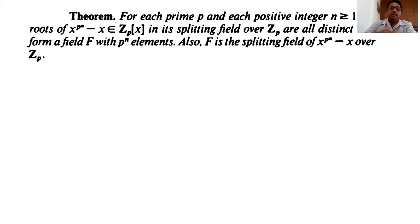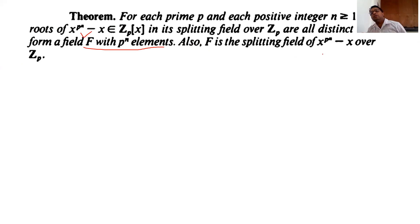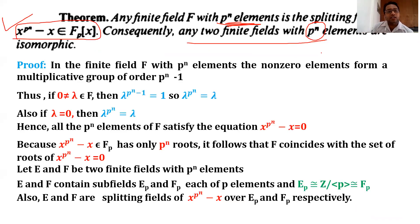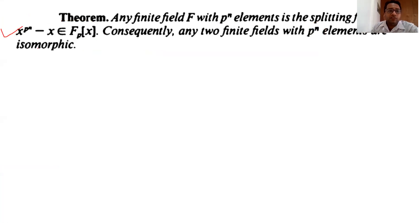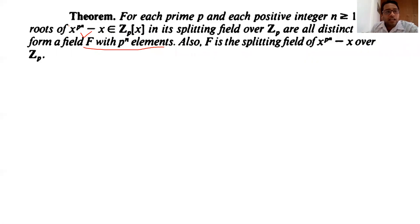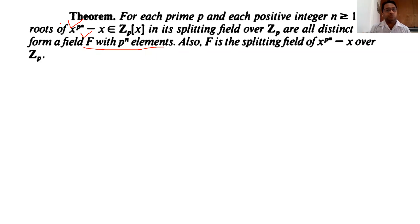We have to prove that the collection forms a field F with p^n elements, and also that F is the splitting field of this polynomial. If the roots form a field, then the roots constitute the splitting field of x^(p^n) minus x. Today we discuss the theorem where we have to prove that this polynomial is the splitting field. Now we are doing the reverse — we solve the polynomial and then show the roots form a field.